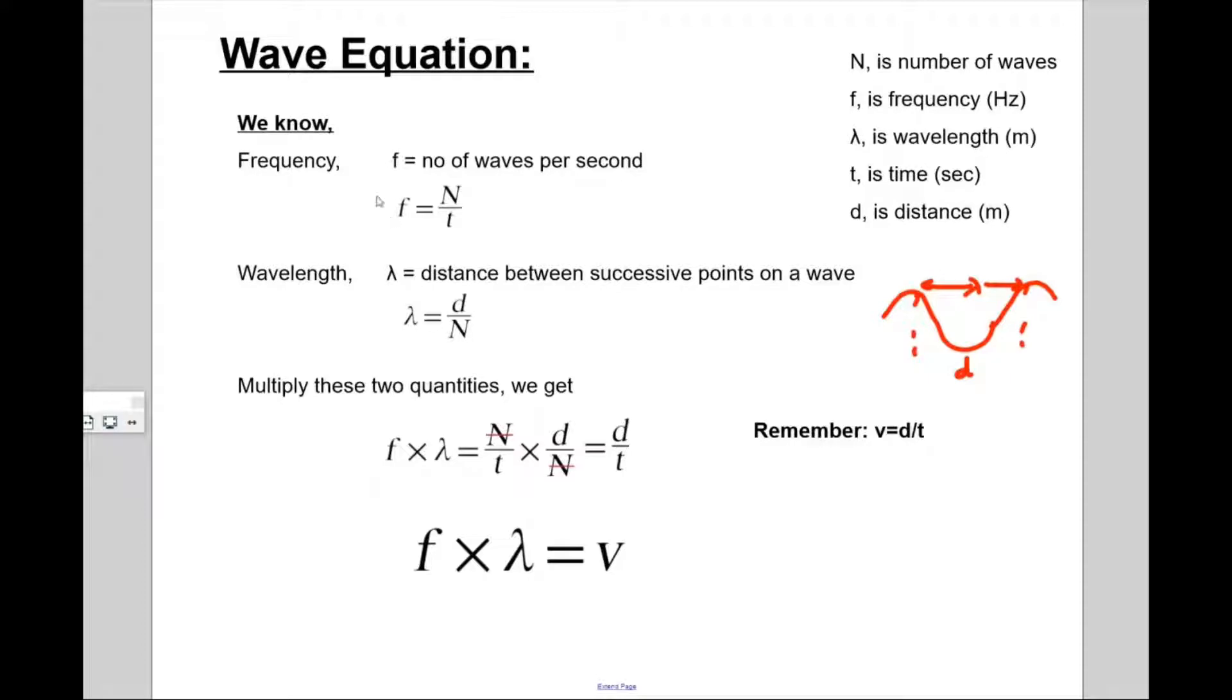Now what we can do is if we multiply these two quantities together, that is F multiplied by lambda. What we see is F is N divided by T and lambda is D divided by N. So if you multiply, the N's get cancelled and we are left with D divided by T. And if you remember the speed of wave, it is distance divided by time. So we can replace this term D divided by T with V, that is your speed.